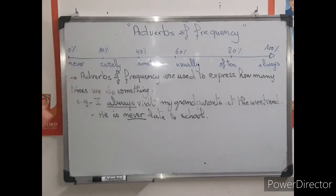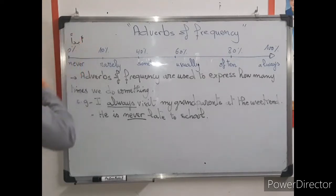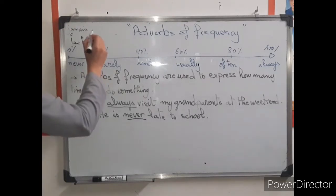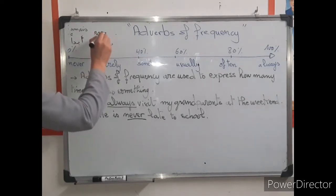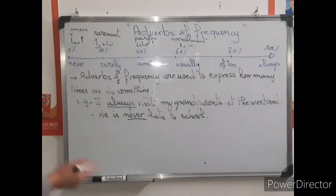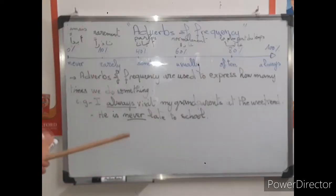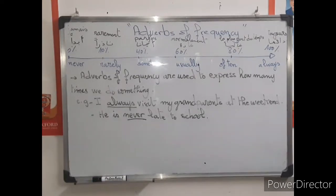Let's read the meaning of each adverb. Never means 'abadan' in Arabic. Rarely — 'arrib' or 'rarement' in French. Sometimes is 'ahyanen.' Usually is 'adaten' or 'normalement.' Often — also pronounced 'often' — is 'galiben' or 'la plupart du temps.' And always is 'toujours' or 'daimman.' So I've translated them into Arabic and French to be clear.